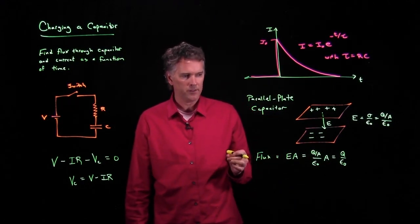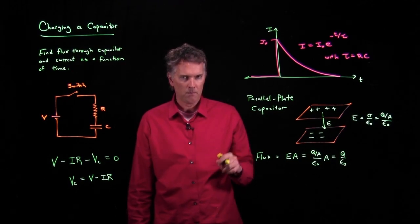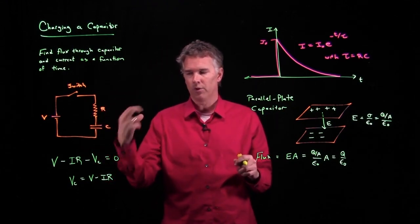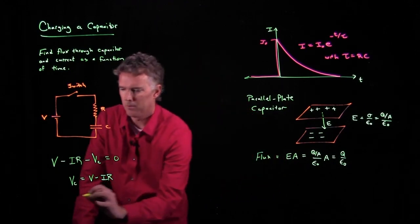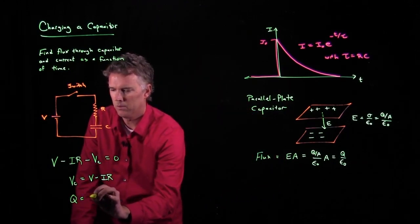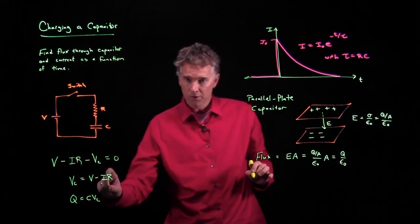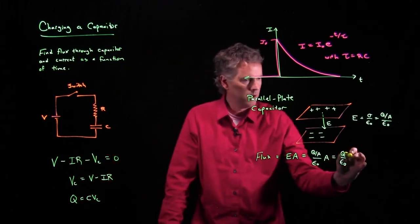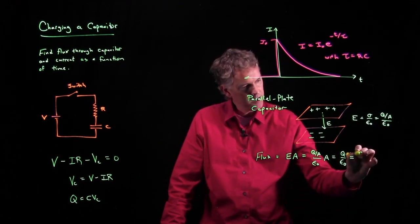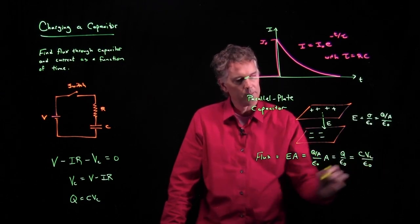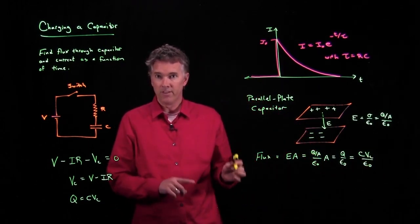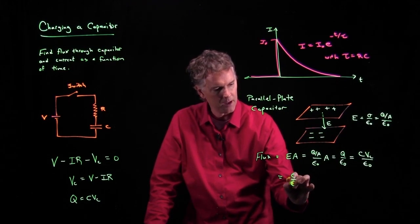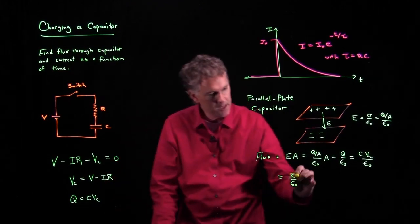Now we don't really know what Q is yet, but we remember that a capacitor is related to how much charge is on it and the voltage across it by this relationship right here. Q equals CV. The voltage across the capacitor multiplied by its capacitance. That tells you how much charge is on it. All right. So we can put that in right here. We've got C times VC over epsilon naught, but VC is this thing right here. So this becomes C over epsilon naught times V minus IR.